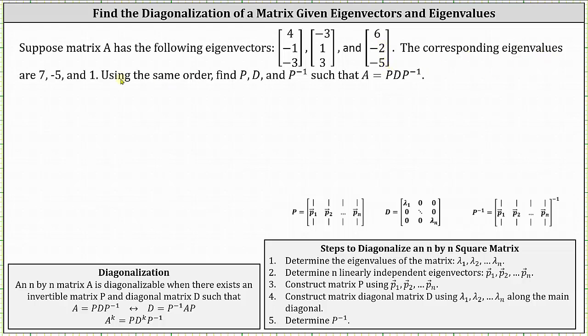And the corresponding eigenvalues are seven, negative five, and positive one. Using the same order, find P, D, and P inverse, such that matrix A is equal to P times D times P inverse, which is the diagonalization of matrix A.